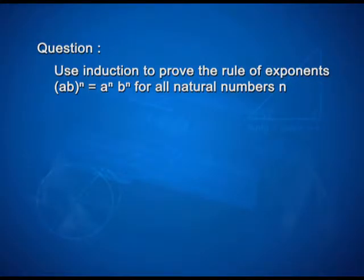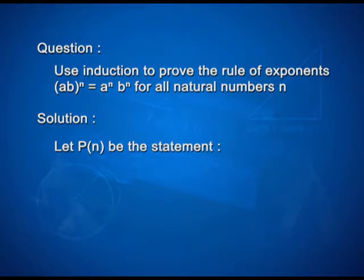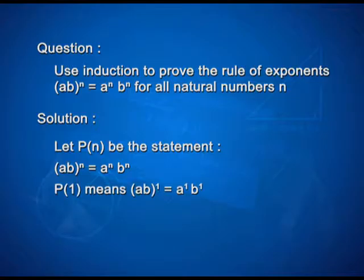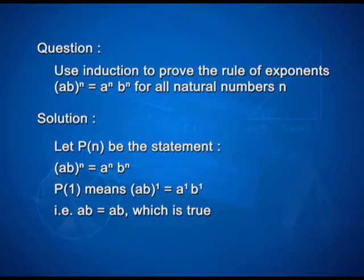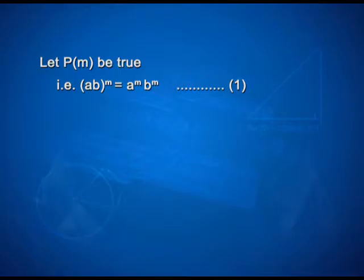Now we shall solve a question using mathematical induction to prove the rule of exponents: (ab)^n equals a^n times b^n for all natural numbers n. For the solution, let p(n) be the statement (ab)^n equals a^n times b^n. Then p(1) means (ab)^1 equals a^1 times b^1, that is ab equals ab, which is true. This implies p(1) is true. Let p(m) be true, that is (ab)^m equals a^m times b^m. Take this as equation 1.